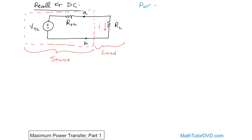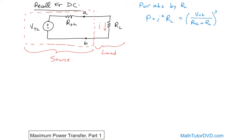The power absorbed by R_L, the resistive load, is P = I² × R. Now we have I drawn on the circuit and R drawn on the circuit. The value of I is just V over the sum of these resistors. So we can substitute that in: V_Thevenin over (R_Thevenin + R_L). This is the current flowing through the load resistor, which is being squared and then multiplied again by R_L — that's going to be the power transmitted to this load.